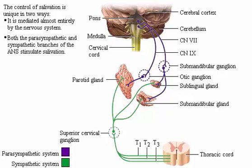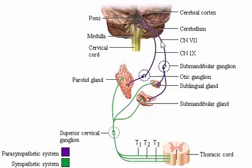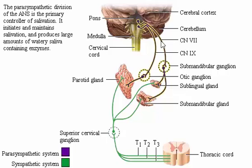Note that parasympathetic and sympathetic nerves have opposing actions on most other organs. The parasympathetic division of the autonomic nervous system is the primary controller of salivation. Parasympathetic fibers are carried in the facial and glossopharyngeal nerves, cranial nerves 7 and 9. Parasympathetic activity initiates and maintains salivation. In general, parasympathetic stimulation produces large amounts of watery saliva containing enzymes.